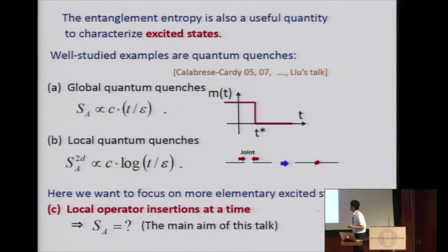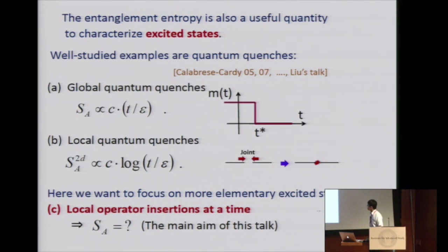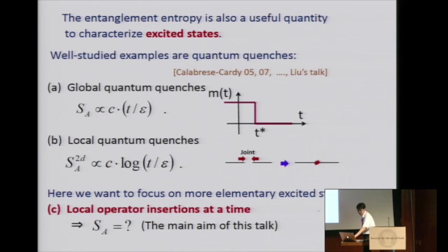But in this talk, I want to focus on the more elementary excited state, which is just given by excitation by a single local operator. In other words, in the context of time evolution, at some particular instant we want to insert some local operator, and I would like to ask how the time evolution of entanglement entropy behaves. This is the main aim of this talk.